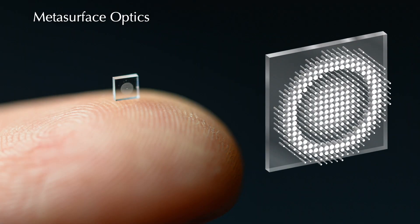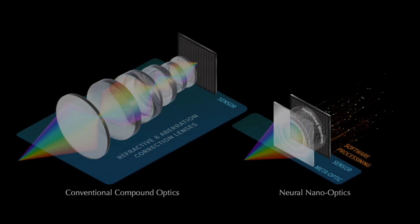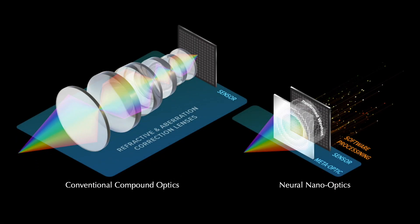In this work, we present metasurface optics as a replacement for bulky compound optics. While a conventional optic relies on a series of glass lenses, a metasurface uses sub-wavelength nano antennae to direct light with much finer control.